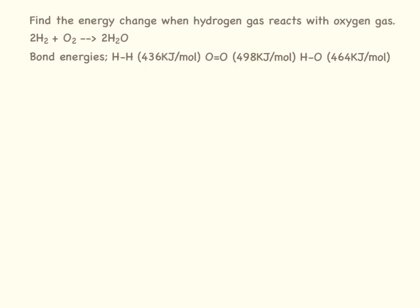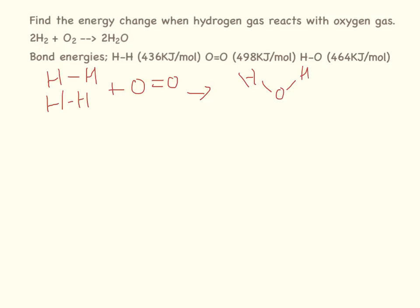In this equation we need to find the energy change when hydrogen gas reacts with oxygen gas. We've been given the bond energies again. The first thing to do is draw out the bonds involved. We have two H₂ molecules plus one O₂ molecule — note that oxygen has a double bond. We get water as the product, and we have two of those.